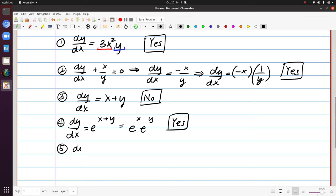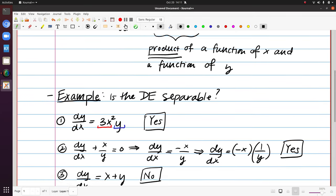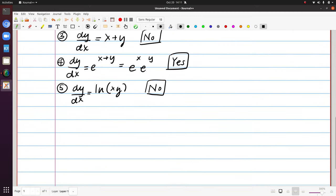If I instead had dy/dx equals natural log of xy, here I have a product of x and y but it's inside of the natural log. So it turns out that I don't have a way of breaking that up into two separate functions, one a function of x and one a function of y. So we have to be careful that yes there is a product involved there but there's no way of me identifying a g(x) and then f(y) so that I could rewrite that expression.